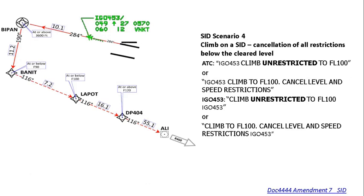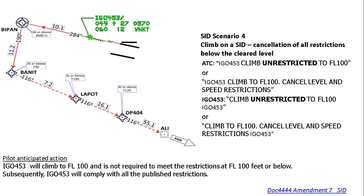Next scenario — climb on SID with cancellation of all restrictions below the cleared level. ATC may say 'IFly 453, climb unrestricted to flight level 100,' or 'IFly 453, climb to flight level 100, cancel level and speed restrictions.' Since both level and speed restrictions are cancelled, IFly 453 is expected to climb to flight level 100 without following any charted restrictions up to that level.